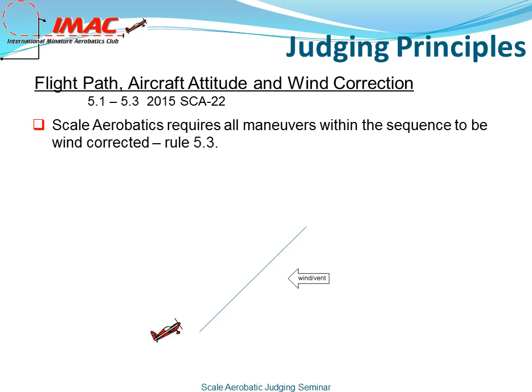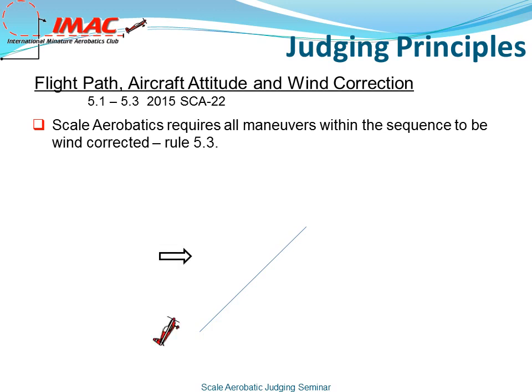On a 45-degree line, the nose would be pitched down into the wind, maintaining a perfect 45 upline. With the wind coming from the back side of the plane, the nose would be pitched up, again maintaining a perfect 45 upline.